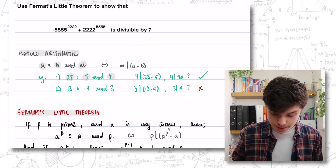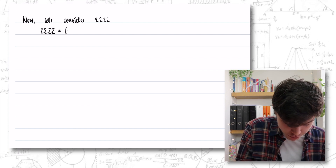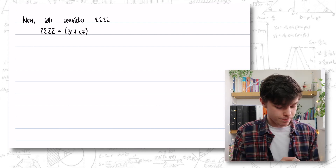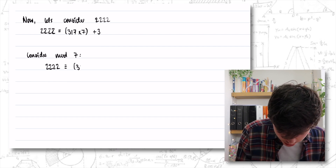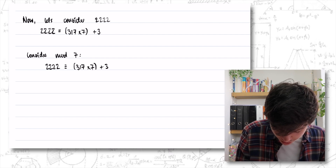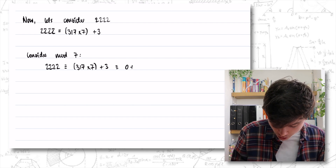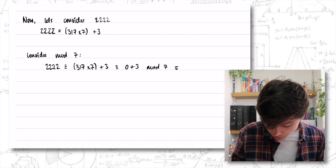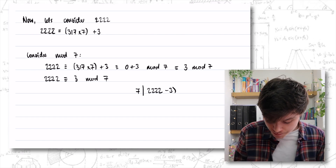Now we're going to consider 2,222. We're going to split that into something times 7 plus something. On a calculator, 2,222 divided by 7 is 317 times 7, and then we add 3. So 2,222 is congruent to 317 times 7 plus 3. That multiple of 7 is 0 mod 7, giving us 0 plus 3 mod 7. Therefore 2,222 is congruent to 3 mod 7.